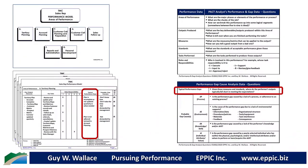You'll generate typical performance gaps against each measure. So you look at each measure and generate — well, if they're not accurate, is that true or not? Is it complete? Et cetera.